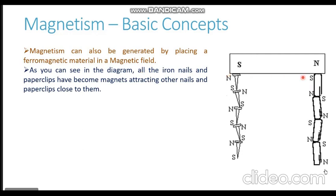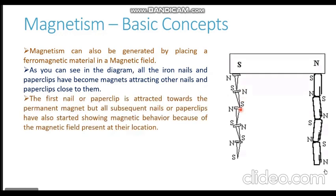As you can see in this diagram, we have some iron nails and paper clips which are clinging or attracted towards a bar magnet. All the iron nails and paper clips have actually become magnets, attracting other nails and paper clips close to them. The first nail or paper clip closest to the magnet is attracted towards the permanent magnet, but all subsequent ones have also started showing magnetic behavior because of the presence of a magnetic field.